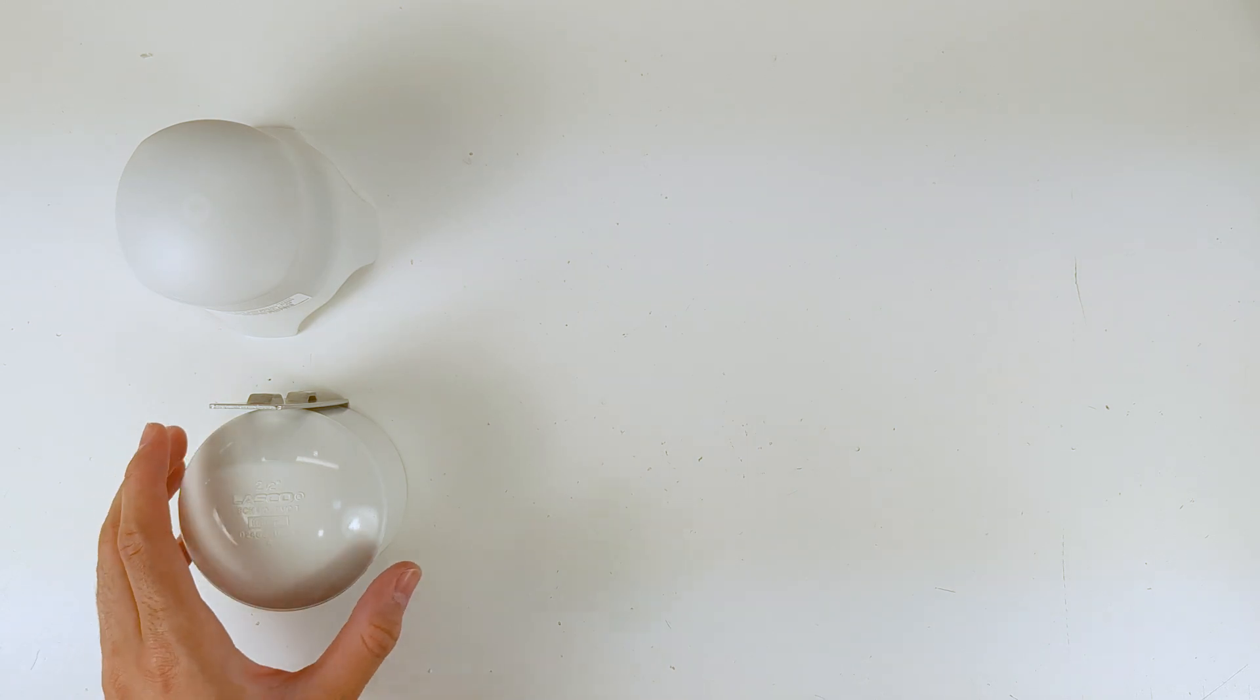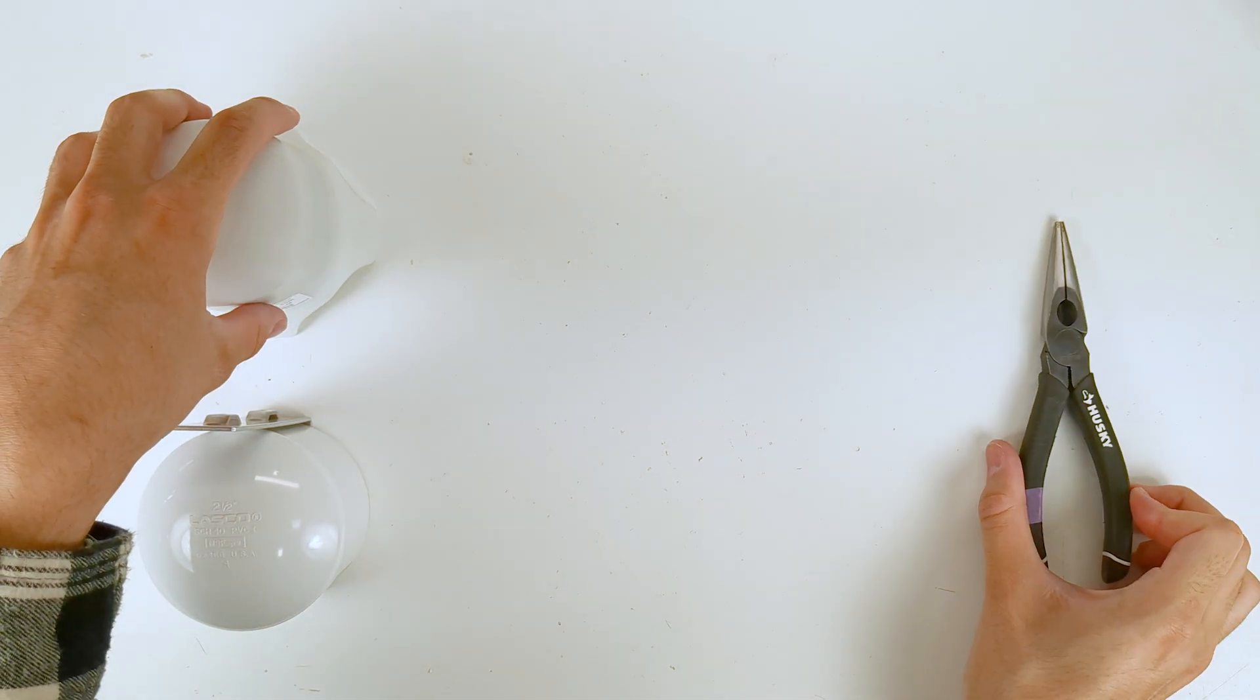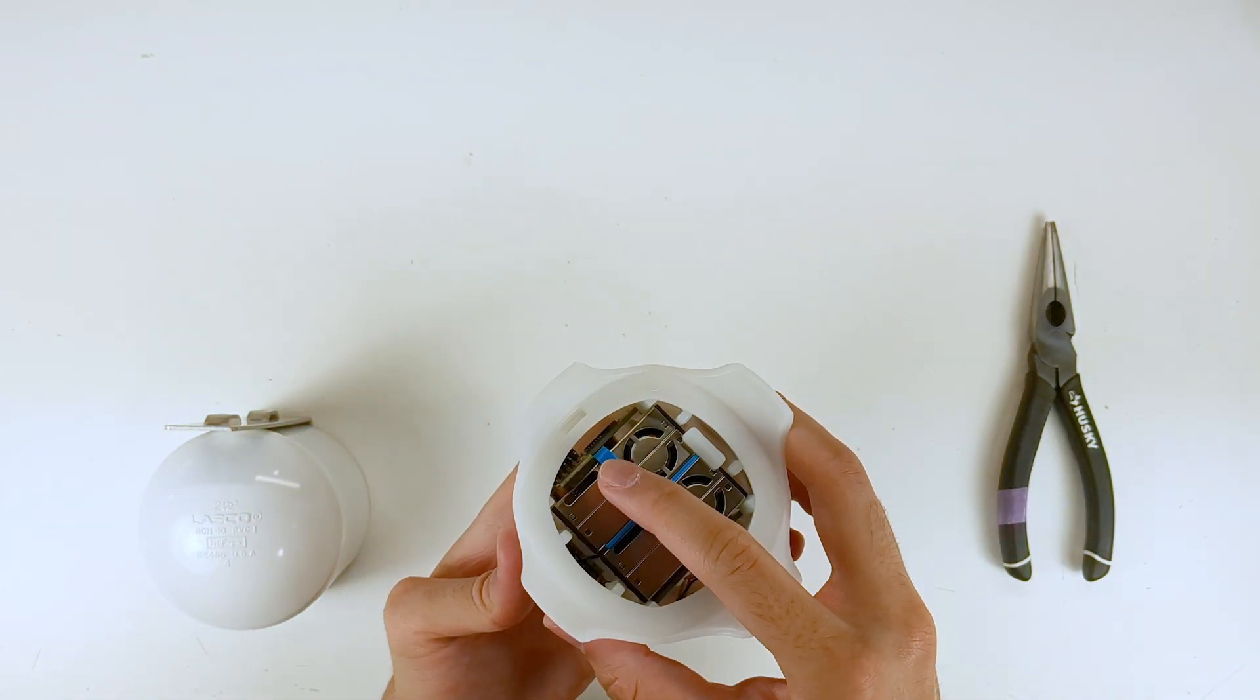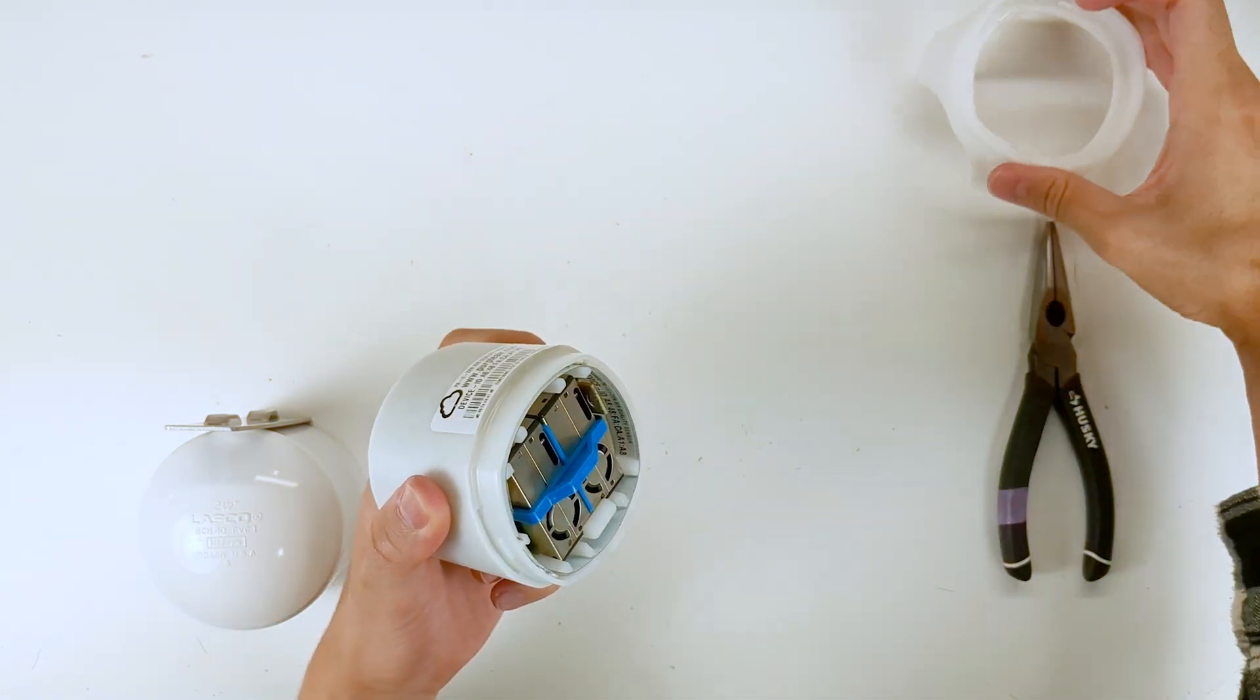The process of removing the BME unit in the Purpler Zen sensor is the same. Taking off the sensor's base before removing the BME unit will make the process easier.